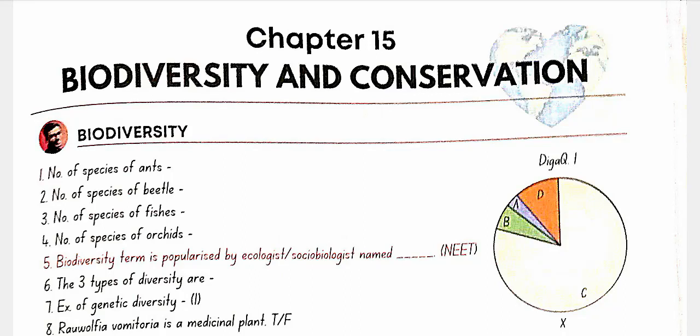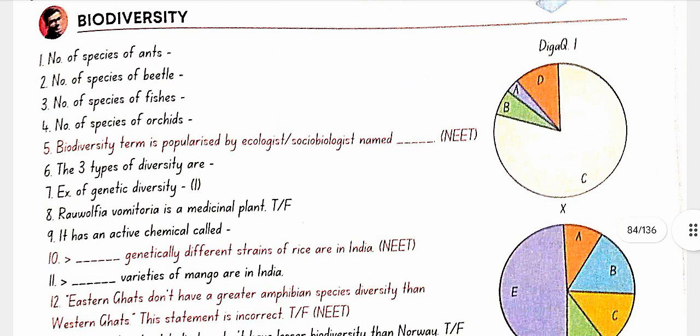Chapter 15: Biodiversity and Conservation. Biodiversity — the number of species of ants is 20,000; number of species of beetles is 3,00,000; number of species of fish is 28,000; number of species of orchids is 20,000. The term biodiversity was popularized by sociobiologist Edward Wilson. Three types of diversity are: genetic diversity, species diversity, and ecological diversity.